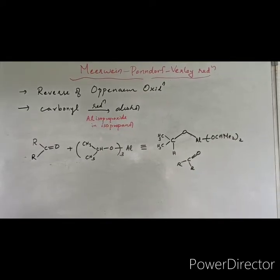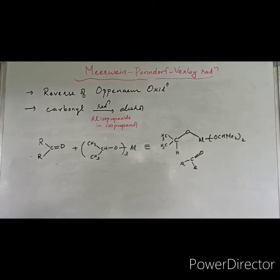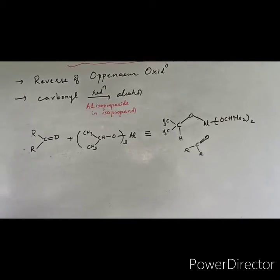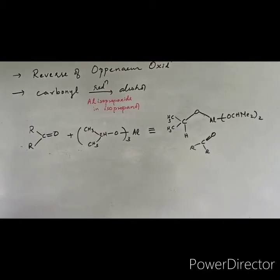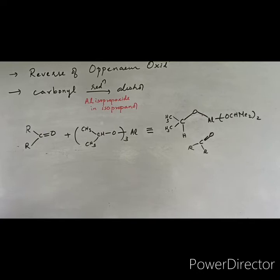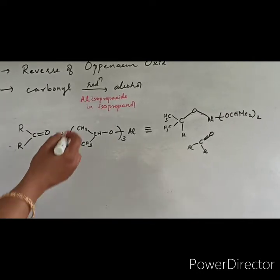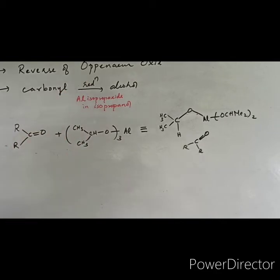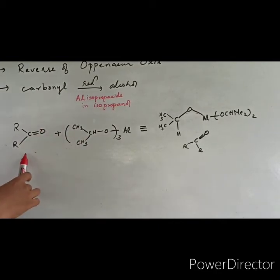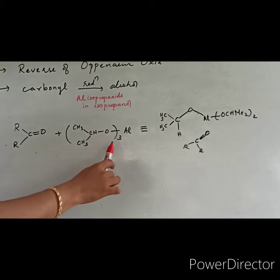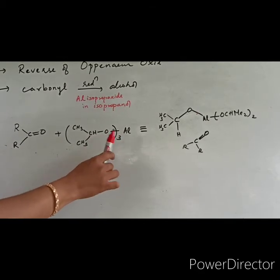As you all know, this is the reverse of Oppenauer oxidation. Here, carbonyl will be reduced to alcohol. The reagents are aluminum isopropoxide in isopropanol. You have to remember the carbonyl compounds are reduced to alcohol in presence of aluminum isopropoxide in isopropanol. Carbonyl compound, I am taking a ketone. This is isopropoxide's alkoxide, aluminum tri-isopropyl oxide.